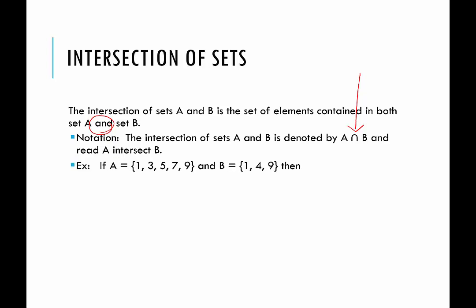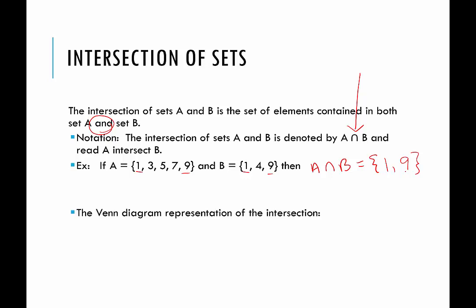For example, if set A contains the elements 1, 3, 5, 7, and 9, and B contains the elements 1, 4, and 9, then A intersect B — what do they both have? They both have a 1, and they both have a 9. So the intersection would contain the elements 1 and 9. This is itself a set. We also might want to look at the Venn diagram representation: the intersection would be whatever's in the overlap. So the overlap in the Venn diagram is the intersection of the sets.